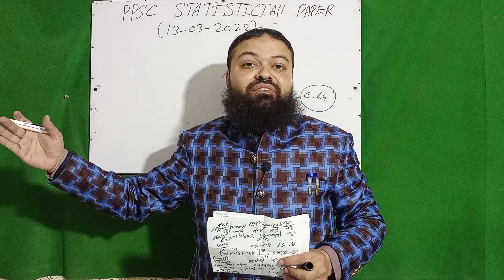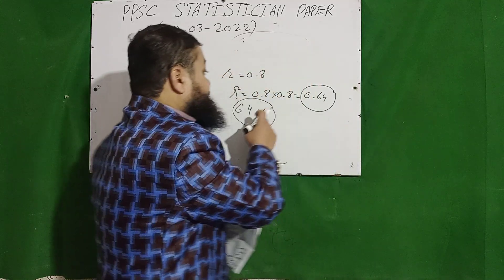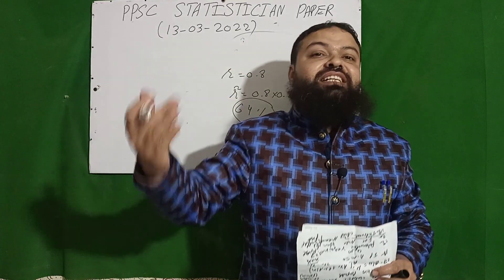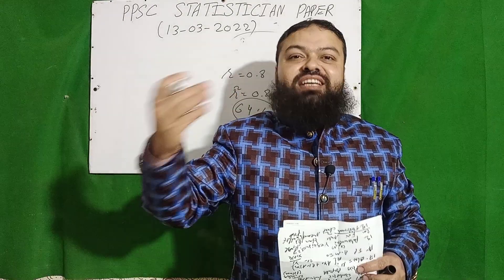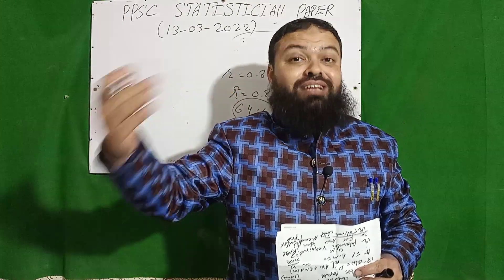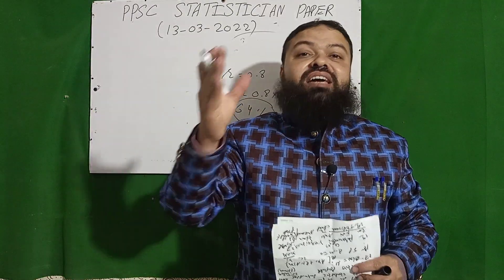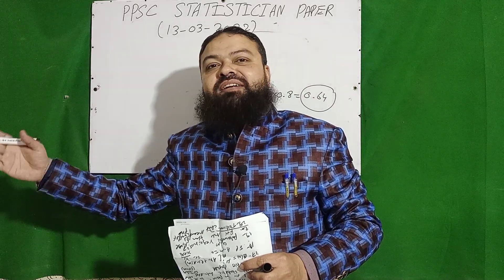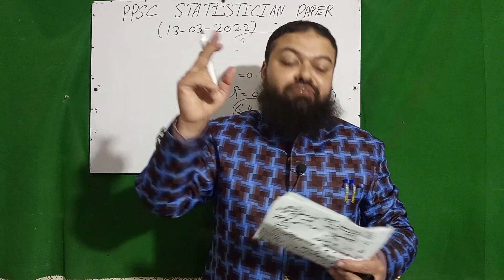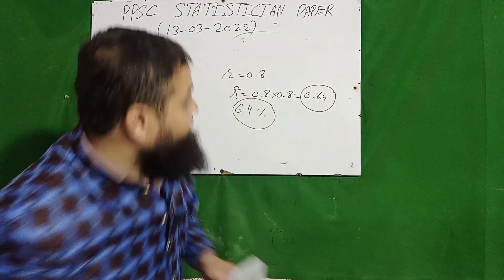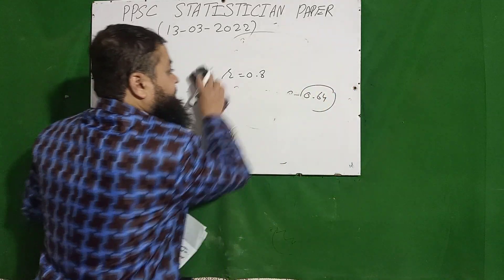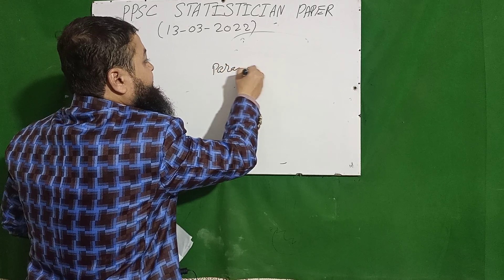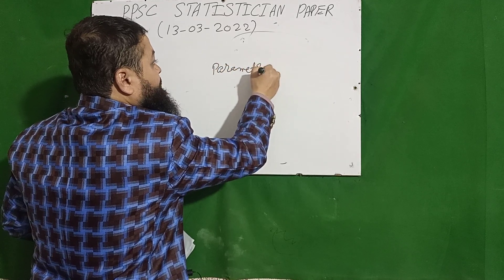For example, if we are interested in the production of wheat as our response variable Y, then 64% of the variation in the production of wheat, sugar cane, rice, or cotton has been explained by all the independent explanatory variables.